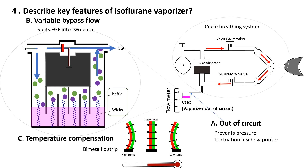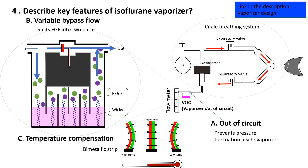Additionally, it features automatic temperature compensation to maintain consistent vapor output despite cooling effects from evaporation, using a bimetallic strip or electronic sensors to adjust gas flow. The bimetallic strip bends in response to temperature changes, regulating the size of the bypass path. For a more detailed explanation, watch the video on vaporizer design.